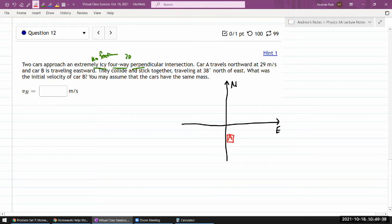Car A travels northward at some speed VA, and car B is traveling eastward at some speed VB. The question isn't giving us the speed VB, but what they are telling us is that after the collision they stick together. This is one of those sticking collisions, and this whole mess of the thing that's stuck together is traveling at some angle.